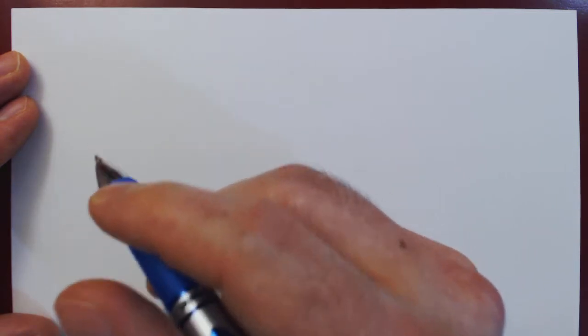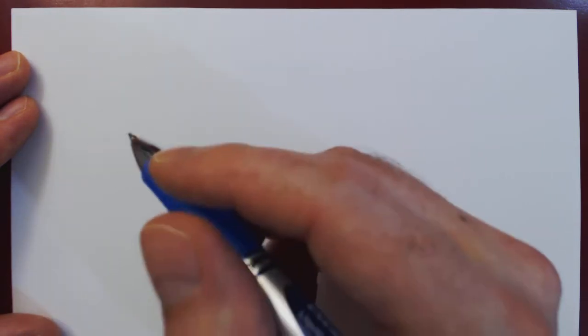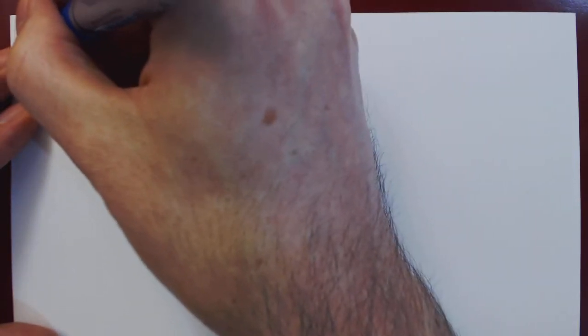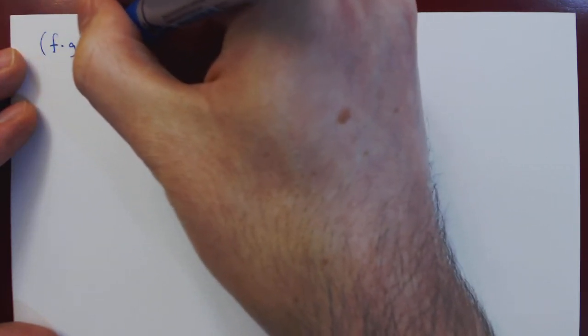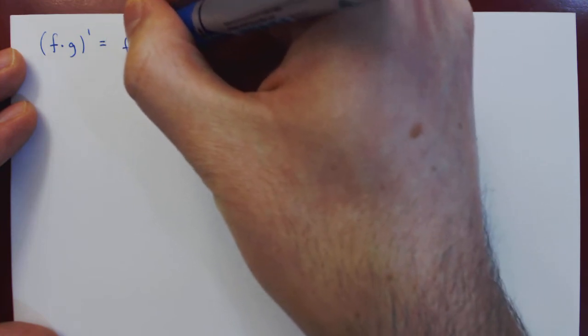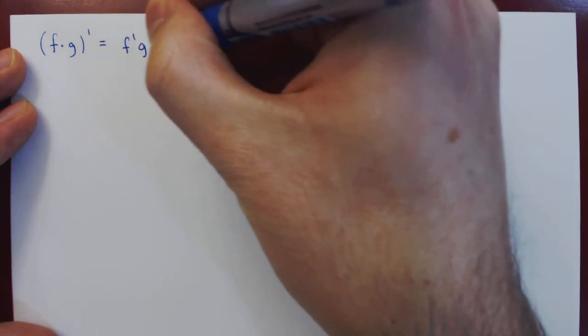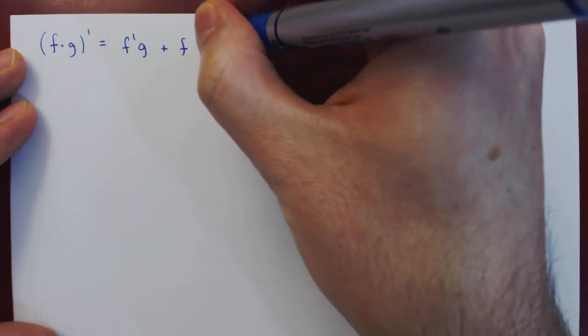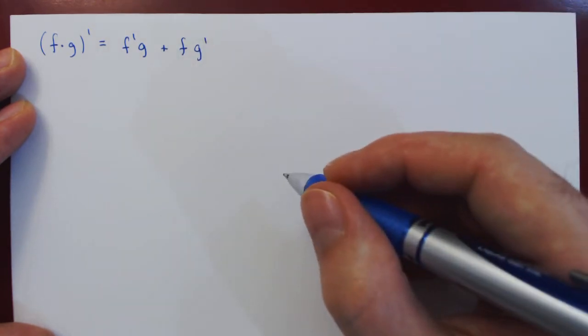In this video, we will introduce the extended product rule of differentiation. If you recall, we know that if we multiply two functions f times g, then the derivative of the product is the derivative of the first function times the second function, plus the first function times the derivative of the second function.